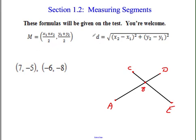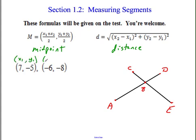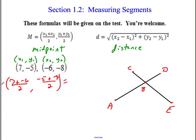Moving on — section 1.2 looked specifically at segments. I'll give you these formulas on the test, so you don't have to memorize them. The midpoint formula: M equals the average of the x-coordinates and the average of the y-coordinates — it's just the average. So if your points are (7, -5) and (-6, -8), the x of the midpoint is 7 plus negative 6 over 2, and the y is negative 5 plus negative 8 over 2.